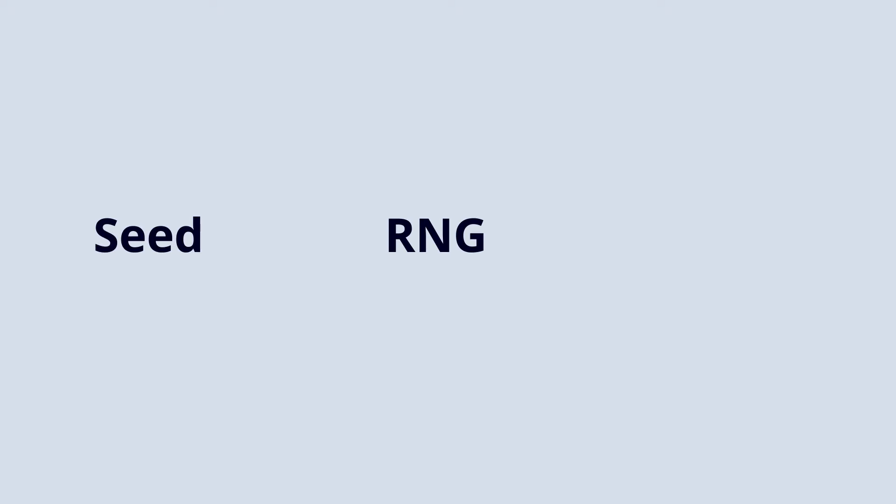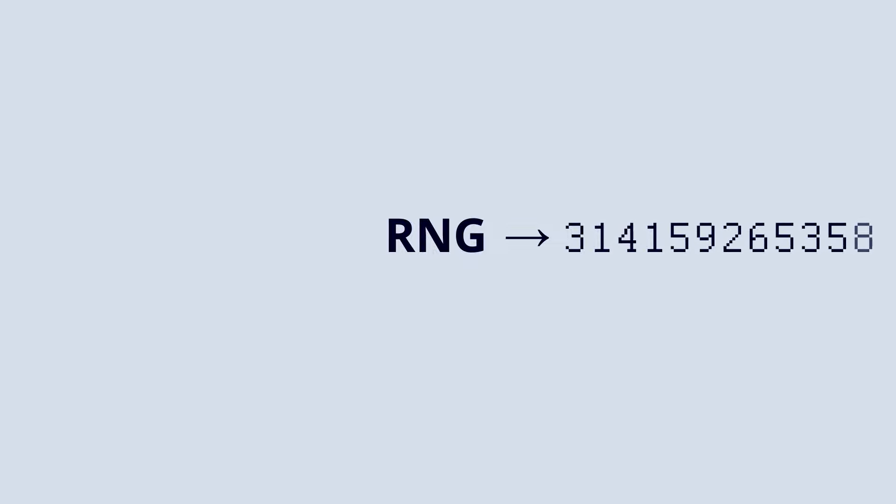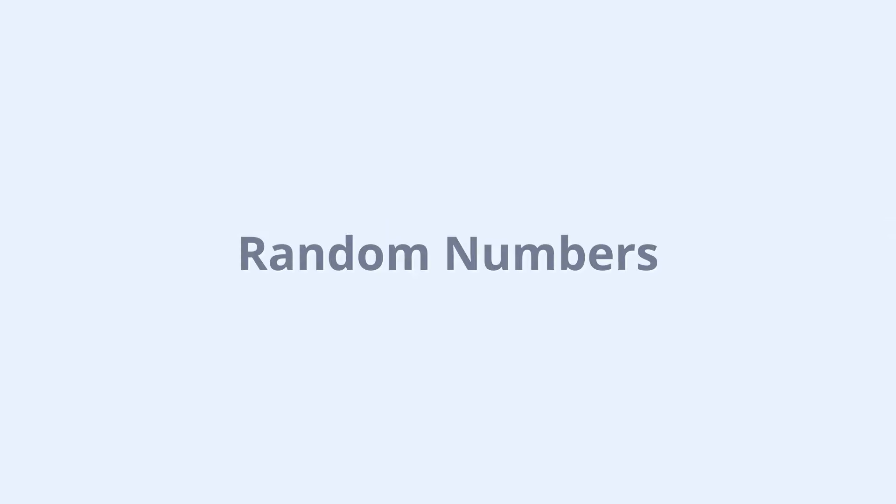Get a seed, feed the seed into the formula, and generate a sequence of numbers using the formula. With this we have our most important ingredient for procedural generation: random numbers.